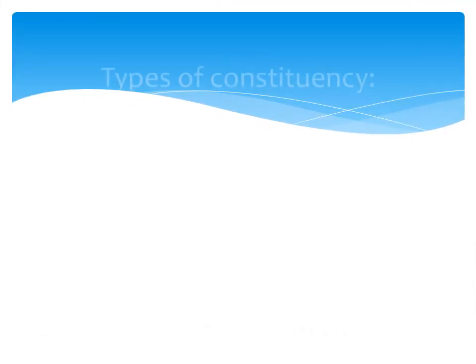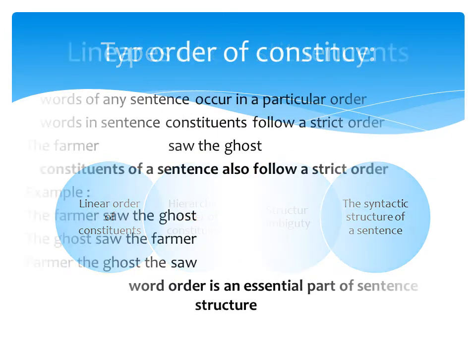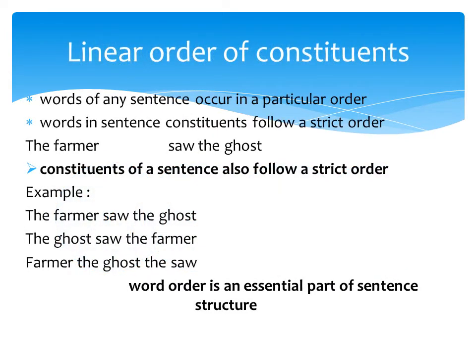Next, there are four types of constituents. Number one: linear order of constituents. Number two: hierarchical order of constituents, which includes structural ambiguity. And the last: the syntactic structure of a sentence.